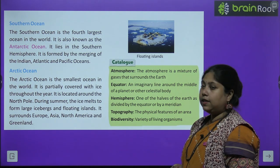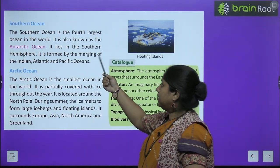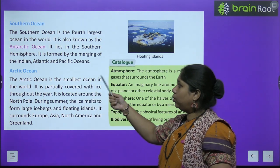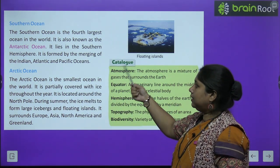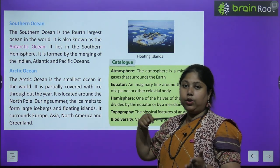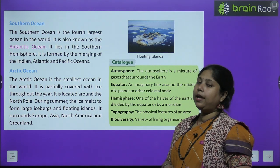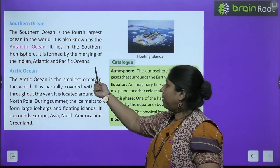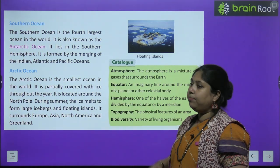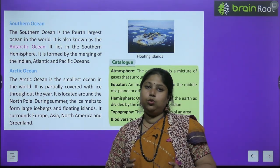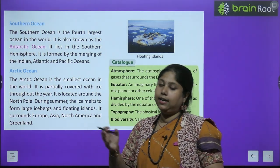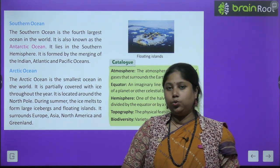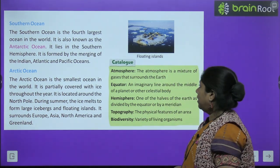The Southern Ocean is the fourth largest ocean in the world. It is also known as the Antarctic Ocean. It lies in the Southern Hemisphere. It is formed by the merging of the Indian, Atlantic, and Pacific Oceans — jahan par merger hota hai in teeno oceans ka, usko hum Southern Ocean ke naam se jaante hain.